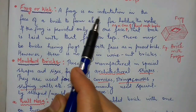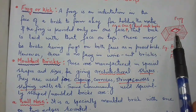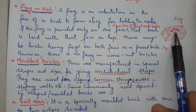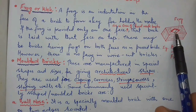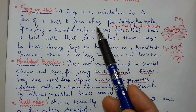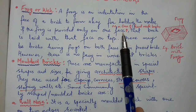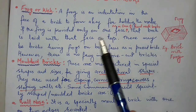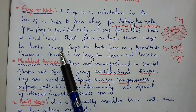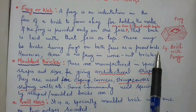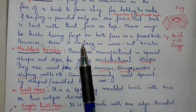Frog or kick: a frog is an indentation in the face of a brick to form a key for holding the mortar. As shown in this diagram, there is a depression or indentation on the face of this brick — this indentation is known as a frog. It is useful to form a key for holding the mortar. If the frog is provided only on one face, as in handmade bricks, that brick is laid with that face on the top.